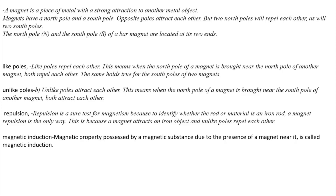What are like poles? Like poles refer to same poles — South-South or North-North. When the North Pole of a magnet is brought near the North Pole of another magnet, both repel each other. The same holds true for the South poles of two magnets. Unlike poles means South-North or North-South; unlike poles attract each other.